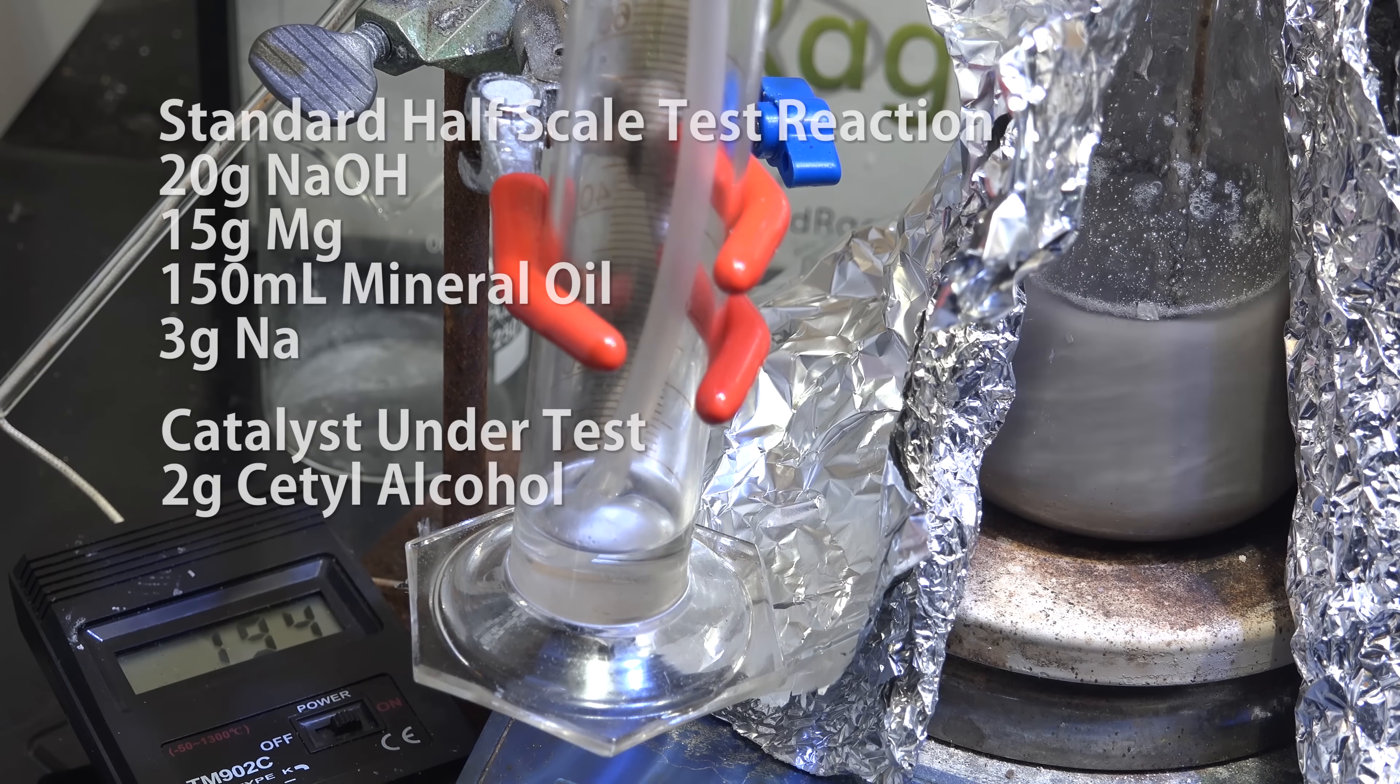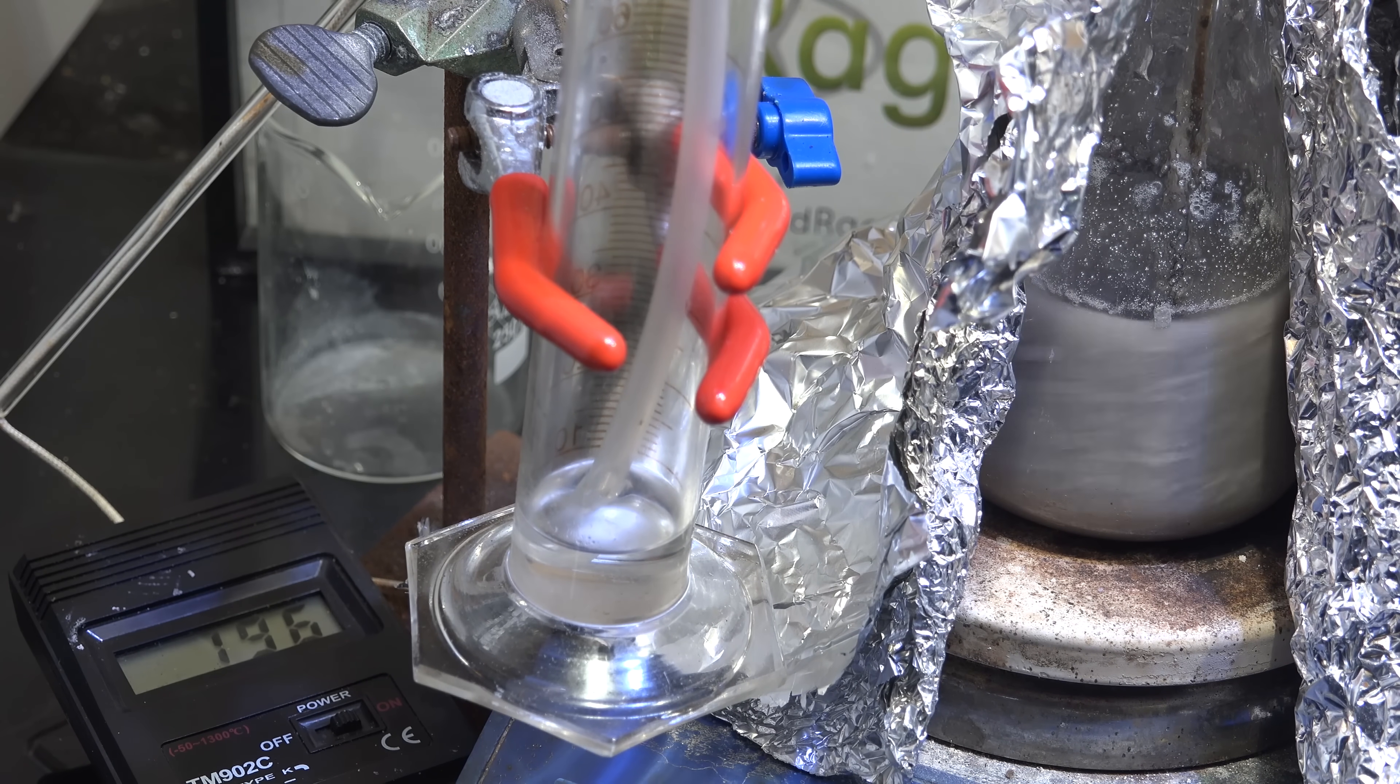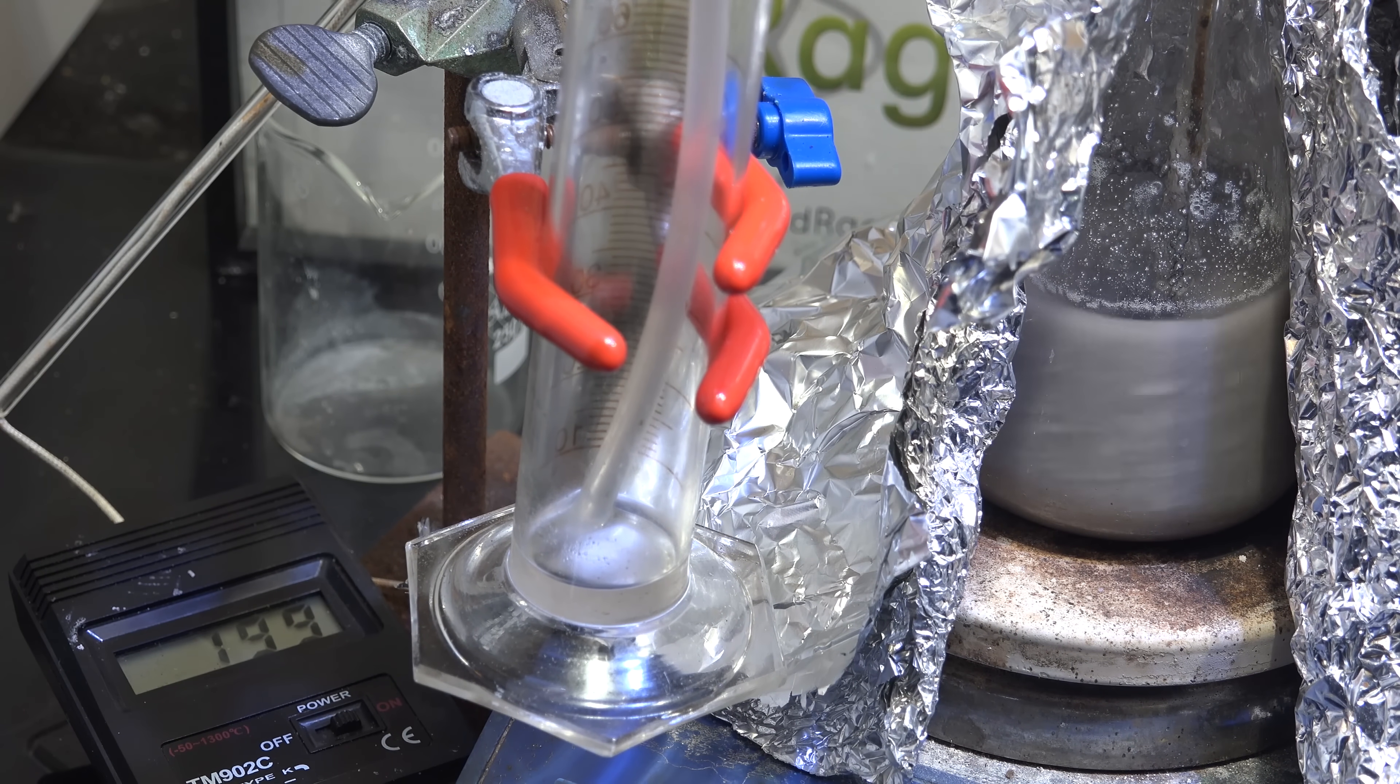So the first thing I tried was cetyl alcohol. Unfortunately when I brought it up to operating temperature at 200 celsius it started a backflow. This indicates reaction failure as there's no hydrogen pushing the bubbler oil out. This in turn means that all the water has been consumed and the magnesium metal reaction to make sodium is not taking over as the primary hydrogen generating reaction. So cetyl alcohol is a failure.